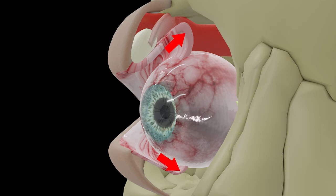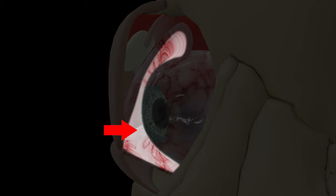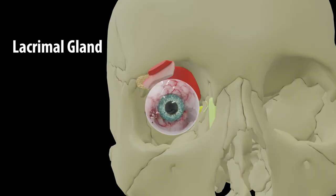At the upper and lower corners, the palpebral conjunctiva — which lines the deep surface of the eyelid — and the bulbar conjunctiva — which lines the front of the eyeball — reflect over each other, meaning they are continuous. These upper and lower corners where the palpebral and bulbar conjunctiva are continuous are called the superior and inferior conjunctival fornices. When the eyelids are closed, this forms a potential space called the conjunctival sac. Now that you know what is referred to as the conjunctival sac, let's move on to study the lacrimal gland.